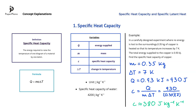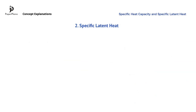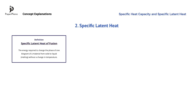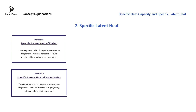Let's move on to specific latent heat. Specific latent heat is used when a substance undergoes phase change — more specifically, when a substance changes between the solid and the liquid phase, or the liquid and the gas phase. Therefore, we talk about the specific latent heat of fusion and the specific latent heat of vaporization. Both represent the energy required for one kilogram of substance to change its phase.